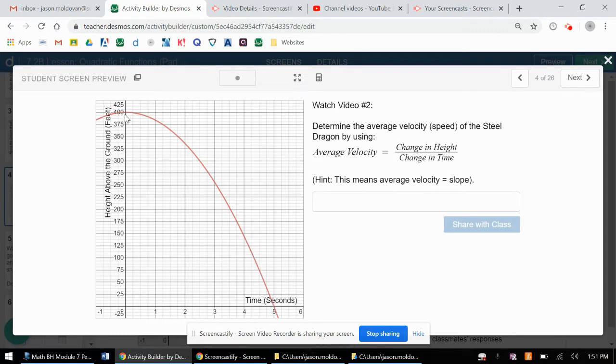And so what I'm trying to say here is that in the same way, the steel dragon roller coaster is accelerating, which means that the speed at each time interval is different and it's getting greater.